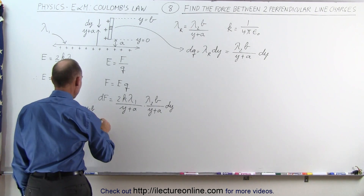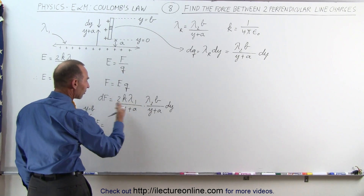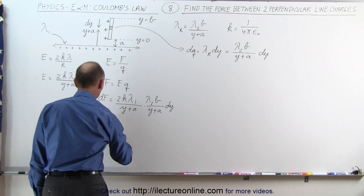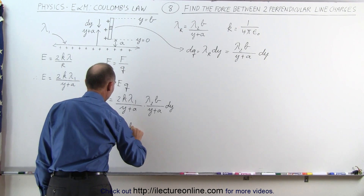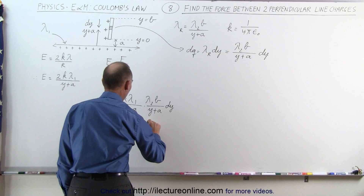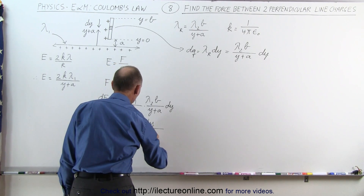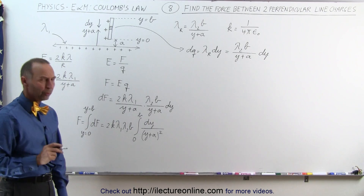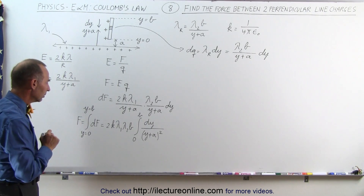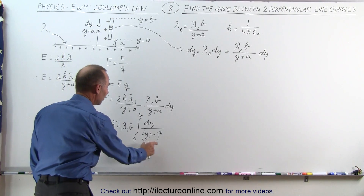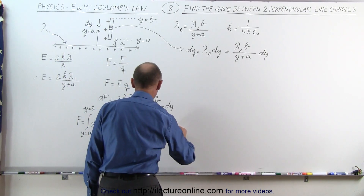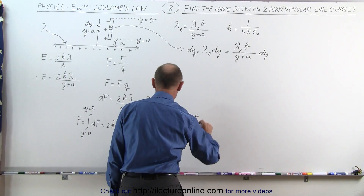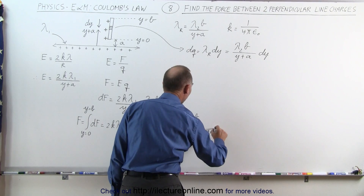So the total force F equals the integral from y equals 0 to y equals b of dF. Factoring out all the constants — 2k, λ₁, λ₂, and b — we get F equals 2k·λ₁·λ₂·b times the integral from 0 to b of dy divided by (y + a) squared.